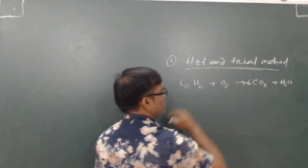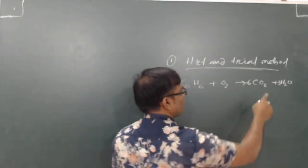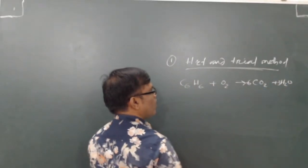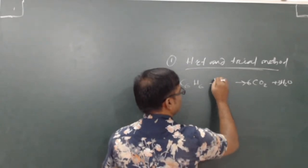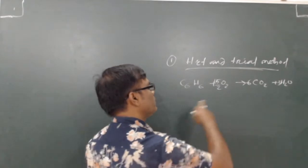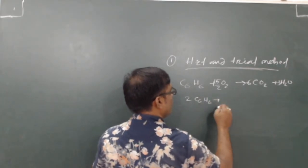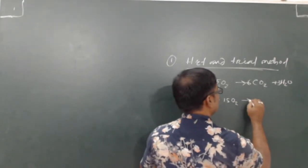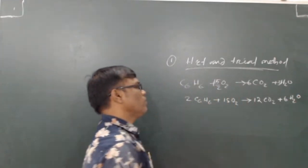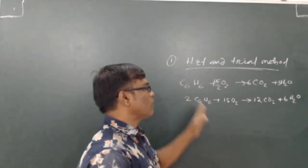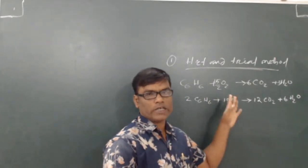At that point it is called a balanced chemical equation. Suppose we put 6 before CO2 — then carbon becomes the same. Hydrogen here is 6 and there is 2, so put 3 before H2O. Now hydrogen is 6 on both sides. The number of oxygen becomes 12 plus 3 equals 15, so put 15/2 before O2. This gives the balanced equation: 2C6H6 plus 15O2 gives 12CO2 plus 6H2O. This is balanced by the hit and trial method.